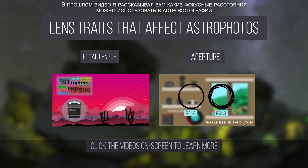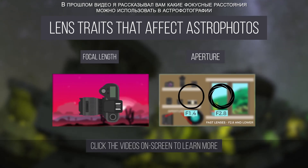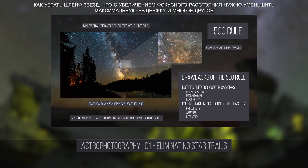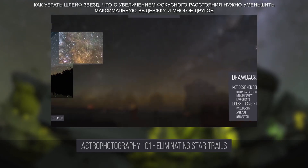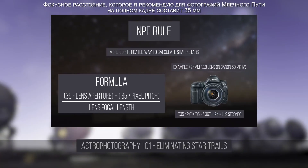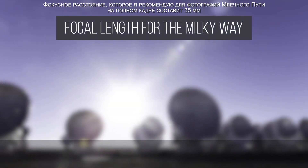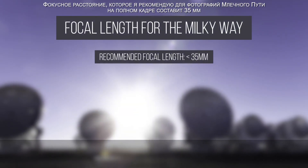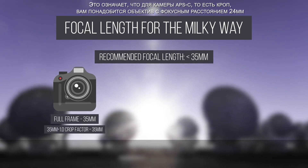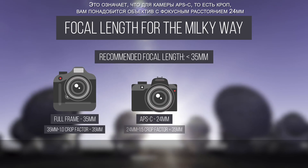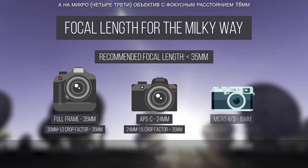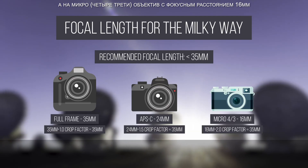But what focal length should you use? In another Astrophotography 101 episode, I explained how to eliminate star trails and how increasing focal length will decrease the maximum shutter speed that you can use. Thus, the focal length I recommend for Milky Way photography is anything less than 35mm. That means that on an APS-C camera, you will need a 24mm lens, and on a micro four thirds camera, a 16mm lens for your maximum focal length.